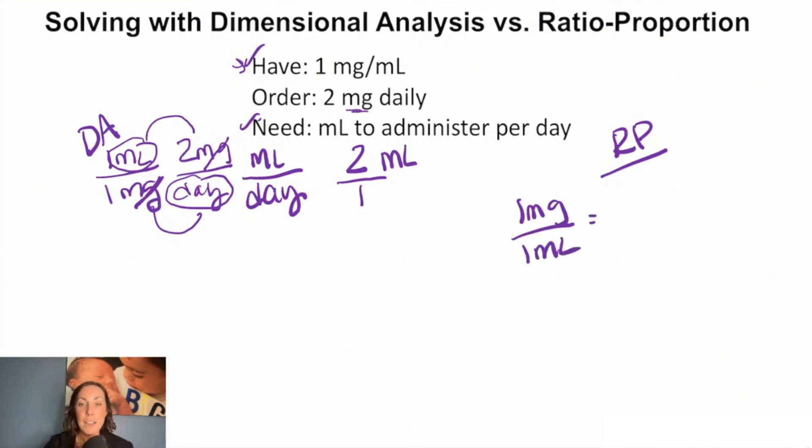And then what we're trying to find out here is we are trying to figure out how many milliliters. So X milliliters that we're going to be administering. So when we set this up, we know that two milligrams, our relationship is equal to X mLs, right? Does that make sense? We want to be able to make sure that we're figuring out how many mLs we're going to give to get two milligrams.